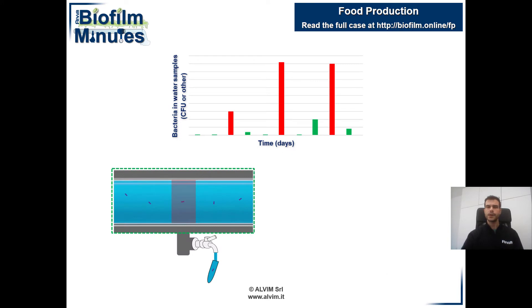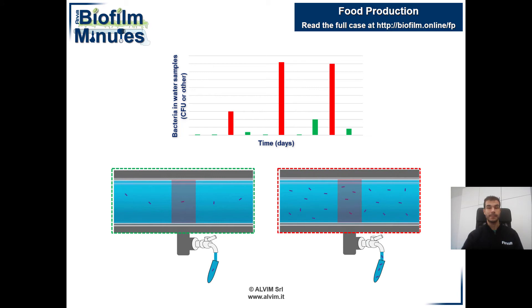At first thought, one could try to explain these results as follows. Some days there might be few bacteria coming with the feed water, leading to low bacterial counts, highlighted in red. While other days there might be many bacteria coming with the feed water, leading to high bacterial counts, also highlighted in red.